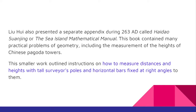Liu Hui also presented a separate appendix during 263 AD, called Haidao Suanjing, or the Sea Island Mathematical Manual. This book contained many practical problems of geometry, including the measurement of the heights of Chinese pagoda towers. This smaller work outlined instructions on how to measure distances and heights with tall surveyor's poles and horizontal bars fixed at right angles to them.